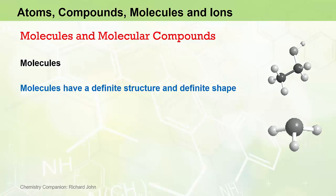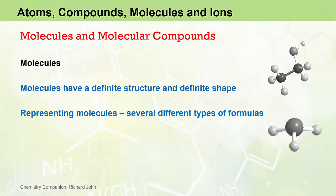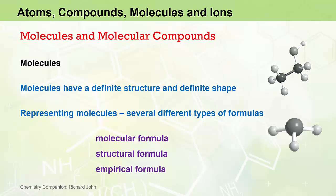The atoms in a molecule are chemically bonded in a specific way, resulting in a definite structure and definite shape. To represent molecules and molecular compounds, we often need to refer to several types of chemical formulas, including the molecular formula, the structural formula, and the empirical formula.